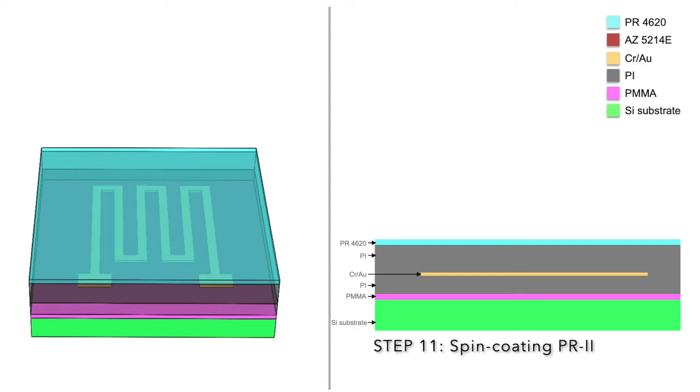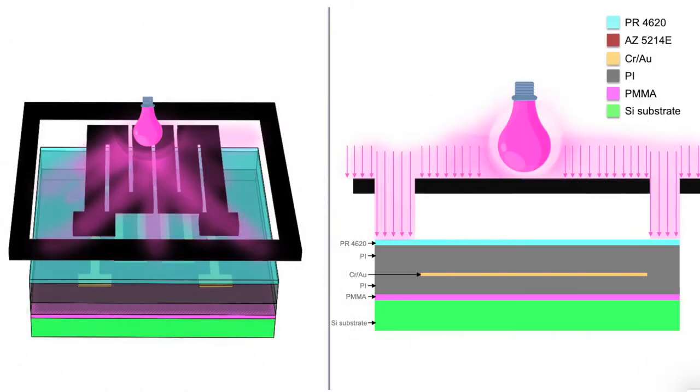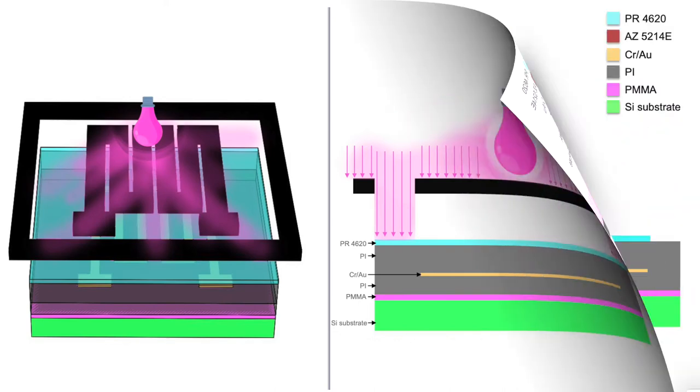For this, we employ a secondary photolithography process with a new mask. We repeat the same steps of the photolithography process which involve spin coating the photoresist layer, mask alignment, UV dosing and photoresist development.